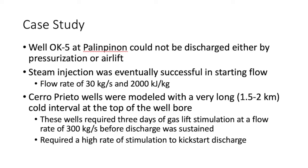The Sierra Preta wells were another set of wells with a very long cold water portion at the top of the wellbore, which prevented initial discharge. These wells required extensive gas lifting at a high rate to attain a steady discharge rate of 300 kg/s. This involved a lot of effort to begin the discharge phase, but the payoff was as good as any normal well or even better, as in the case of Palapitian.